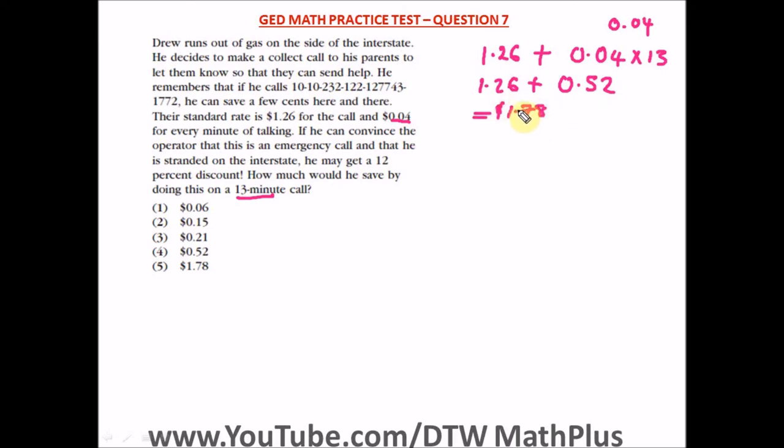So this is the amount he's supposed to pay. But if he convinces the operator that it's an emergency call, he would get a 12% discount. So we find the discount, 12% discount of this amount.